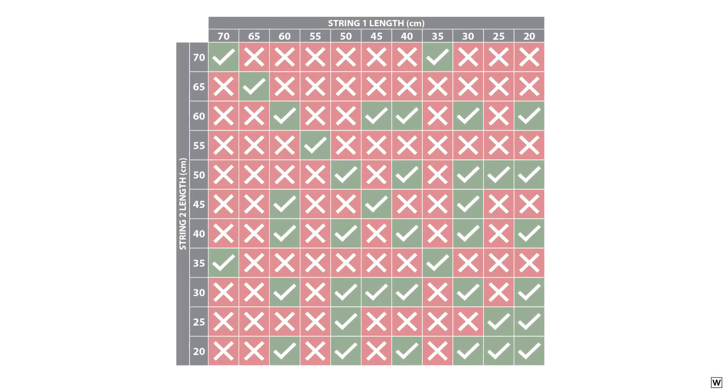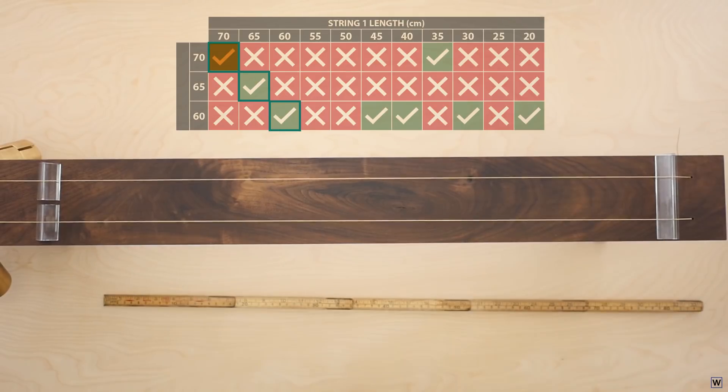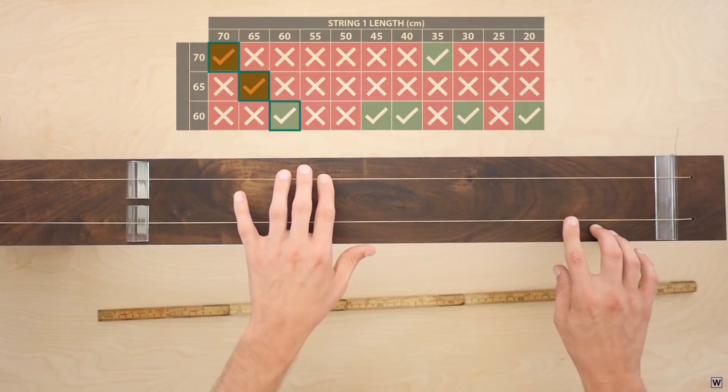Let's start with length. The simplest pattern I see is that strings with the same length sound good together. This is not too surprising, since these strings are at the same tension and have the same length, they should make pretty much the same sound.